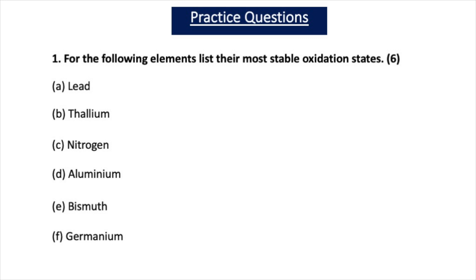Now let's test your understanding with some practice questions. The first question asks you to list the most stable oxidation states for the following elements. If the element is at the top of the group it will use all its outer shell electrons for bonding, and if it's towards the bottom there'll be a tendency for the S2 electrons not to be used in bonding, giving an oxidation state 2 less than the maximum. For question 1A, the most stable oxidation state of lead is plus 2, because lead is at the bottom of group 4 and the inert pair effect is strongest there.